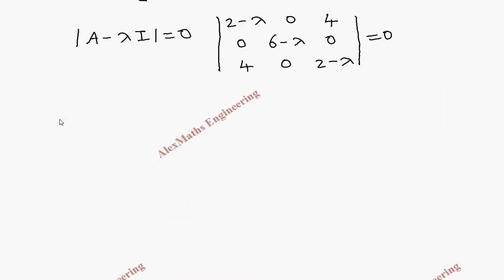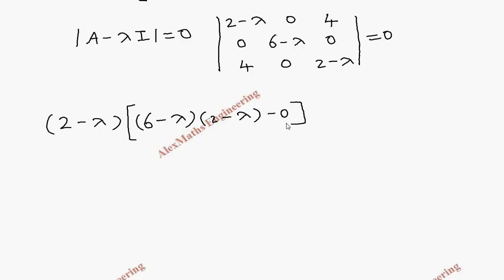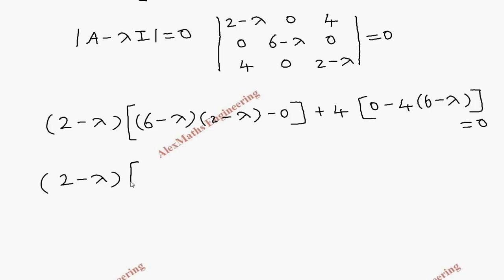We expand this determinant taking the first element: (2 minus lambda) times [(6 minus lambda)(2 minus lambda) minus 0], then no middle element since it is 0, then the last element: plus 4 times [0 minus 4(6 minus lambda)], all equal to 0. Expanding (6 minus lambda)(2 minus lambda) gives 12 minus 6 lambda minus 2 lambda plus lambda squared.